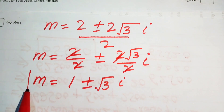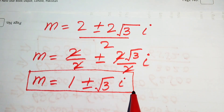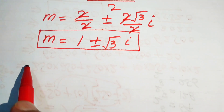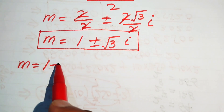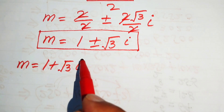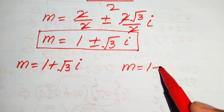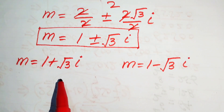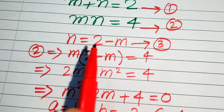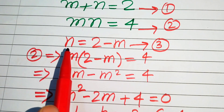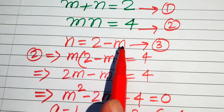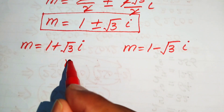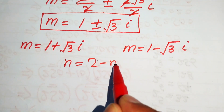We get two complex values of m. To find the corresponding values of n, we use equation number 3: n equals 2 minus m. The two values of m are: 1 plus square root of 3 iota and 1 minus square root of 3 iota.